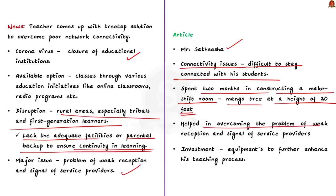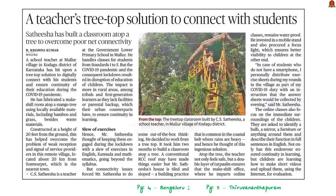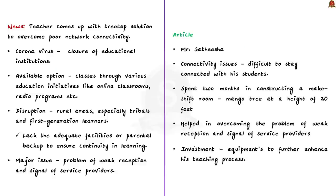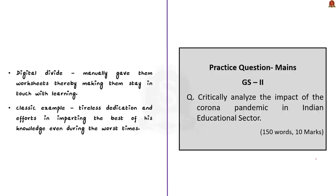Since the room was located at the height of 20 feet from the ground, there was no interference and signal reception was better. This helped children continue their online education. He also invested in a few equipment to further enhance the teaching process. This example can be used as a case study in mains answers when the question is about digital divide, ethical values, attitudinal change, behavioral change, or leadership qualities. This article is a classic example of a teacher's tireless dedication in imparting knowledge even during the worst times.